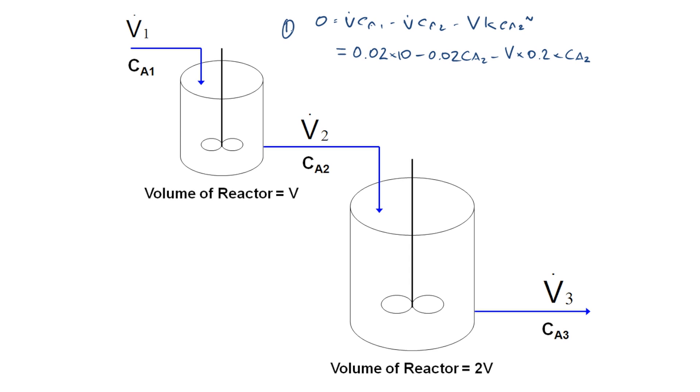Similarly, we can write the overall equation for reactor 2. Now in this case, we don't know the concentration coming into reactor 2, but we do know the concentration coming out because we calculated it in the previous stage. It was 2 kmol per meter cubed, and our volume now is 2V rather than just V, and we know the concentration coming out.